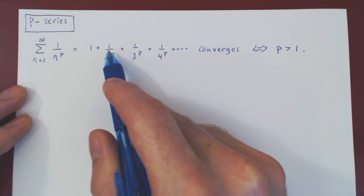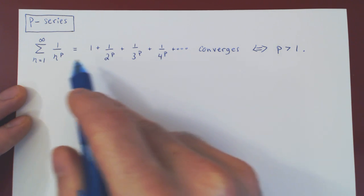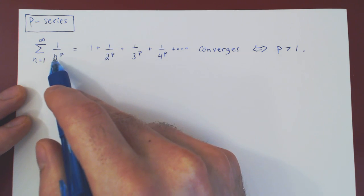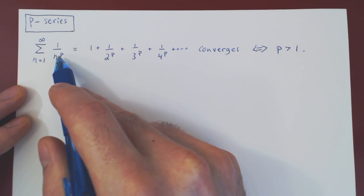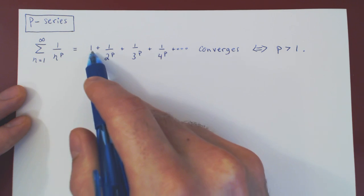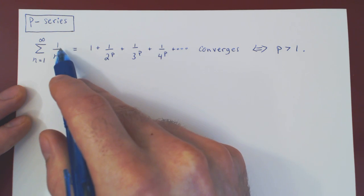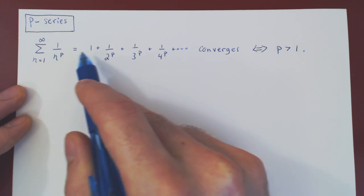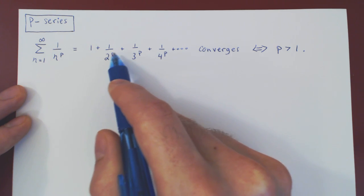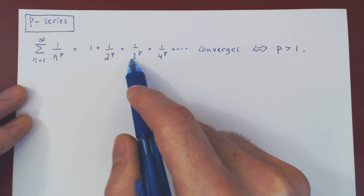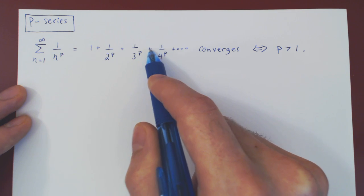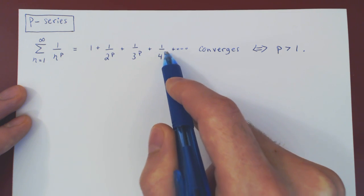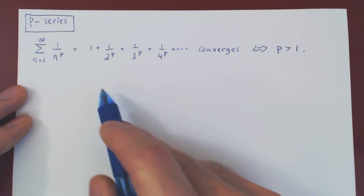If you expand out the first few terms of the series, you get: 1 to the power p is 1, so you get 1 plus 1 over 2 to the p, plus 1 over 3 to the p, plus 1 over 4 to the p, and so forth.